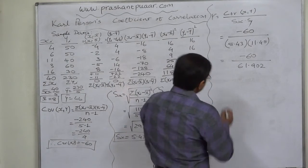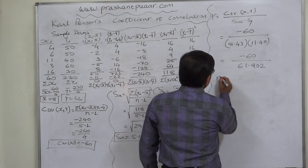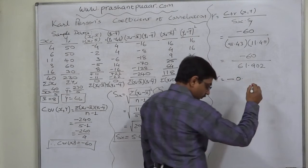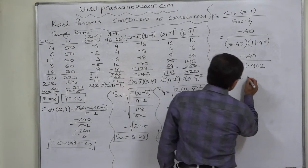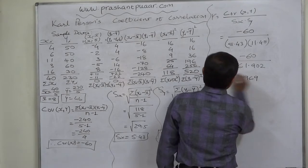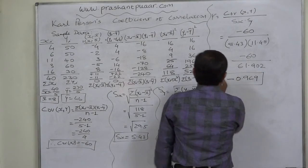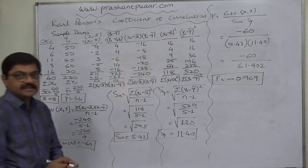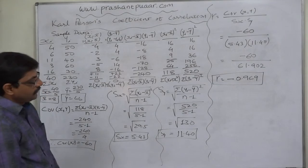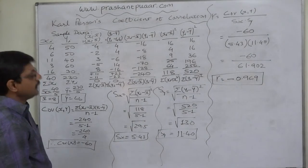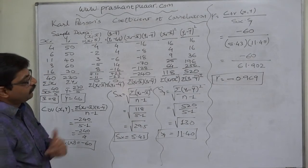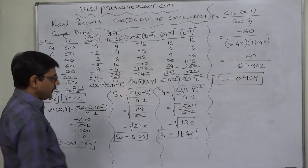So ultimately, we obtain the coefficient of correlation as −0.969. This completes the calculation of the coefficient of correlation by the formula by definition.